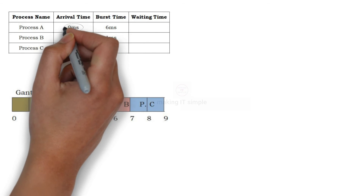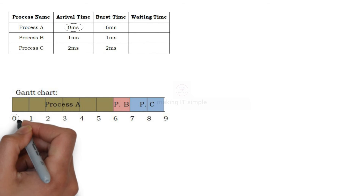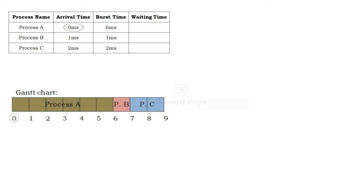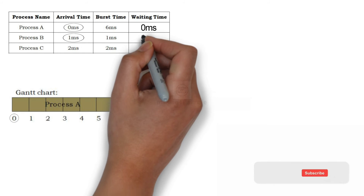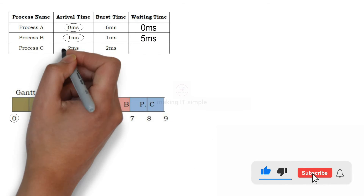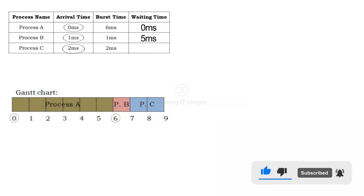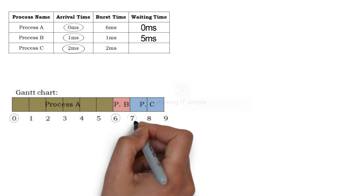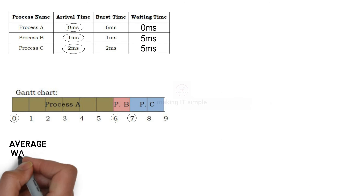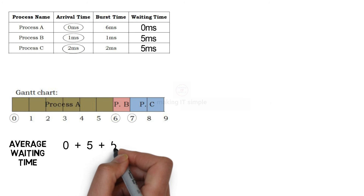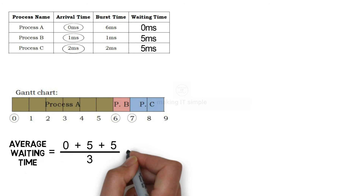Process A arrived at 0ms and CPU started executing it at 0ms, so its waiting time is 0. Process B arrived at 1ms but CPU started its execution at 6ms, so it waited 5 milliseconds. Process C arrived at 2ms but CPU started its execution at 7ms, so it also waited 5 milliseconds. Average waiting time = (0 + 5 + 5) / 3 = 3.33 milliseconds.